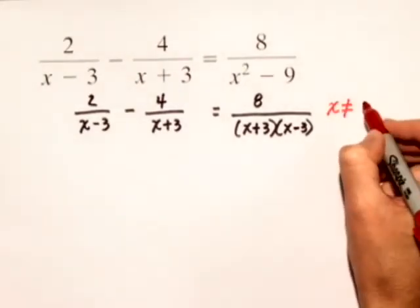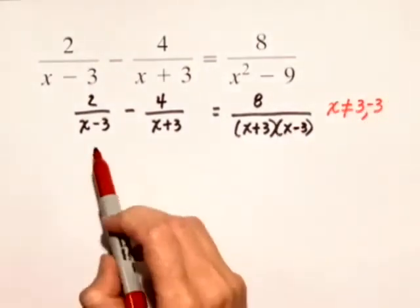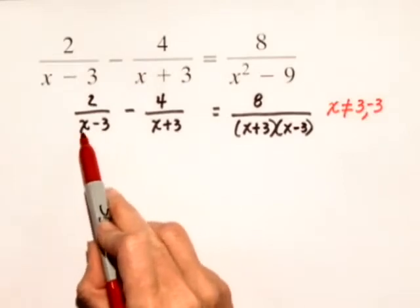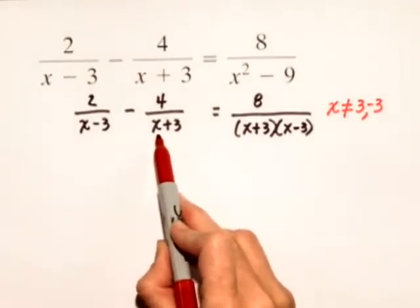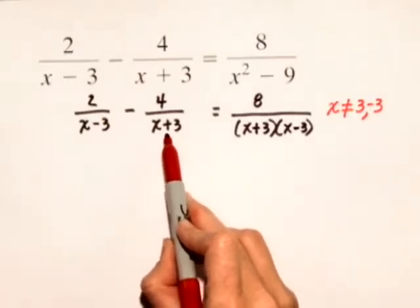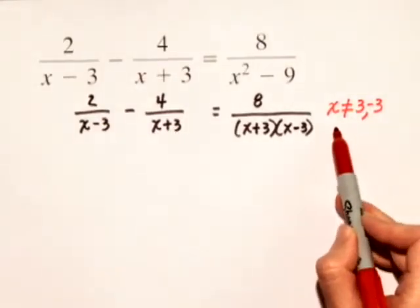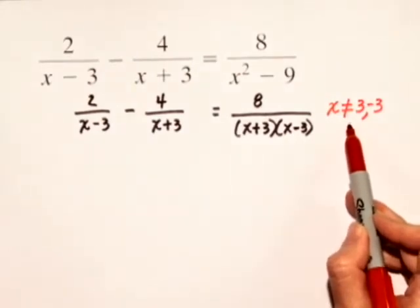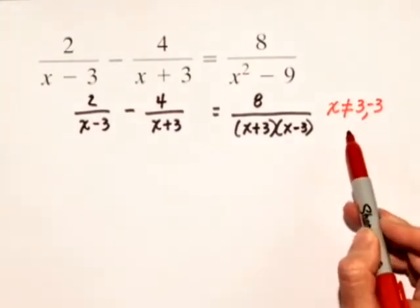In this case, we cannot let x equal positive 3 or negative 3, because if we let x equal positive 3, in our first fraction, 3 minus 3 would give us 0 in the denominator, and we cannot divide by 0. And here in the second fraction, if we substitute negative 3 for x, that would again give us 0 in the denominator. So it's a good idea just to keep in mind when you have a rational equation, keep in mind what your restricted values are, remembering that 3 or negative 3 in this case cannot be part of the solution set.